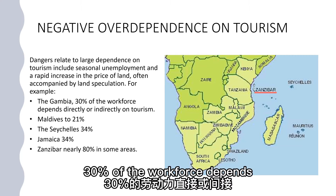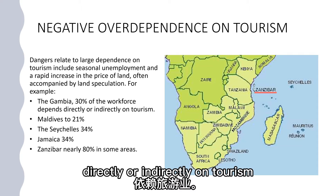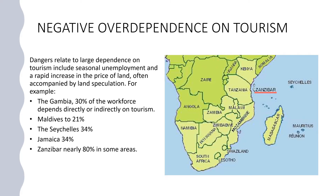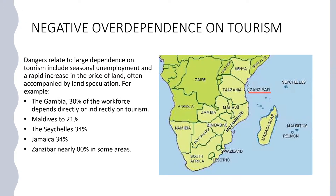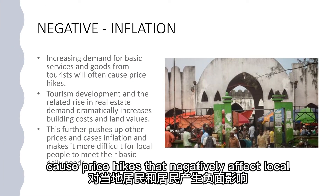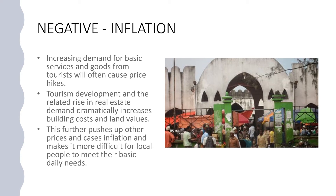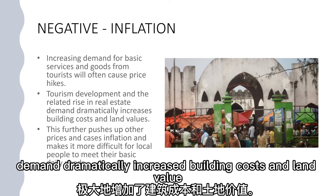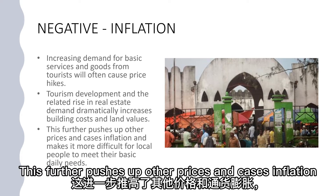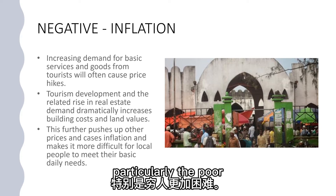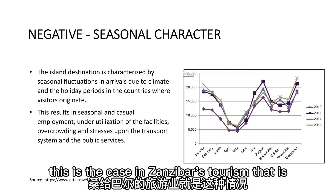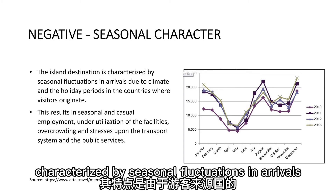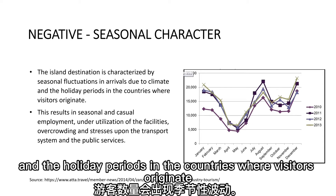In the Gambia, 30% of the workforce depends directly or indirectly on tourism. The Maldives 83%, Seychelles 21%, Jamaica 34%, and about 80% in Zanzibar. Increasing demand for basic services and goods from tourists will often cause price hikes that negatively affect local people and residents. Tourism development and the related rise in real estate demand dramatically increase building costs and land values, further pushing up other prices, causing inflation and making it more difficult for local people, particularly the poor.